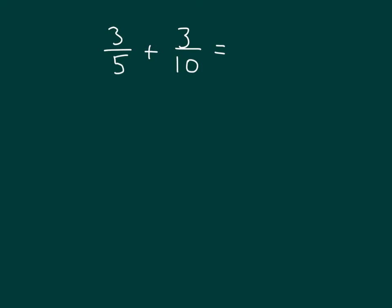Here we're asked to add three-fifths with three-tenths. We notice that we have different units. Draw our tape diagram for three-fifths to begin with. And we shade in three of those for three-fifths.